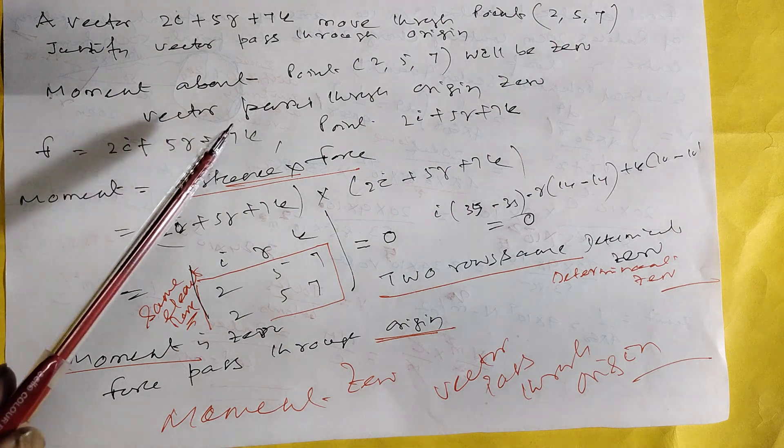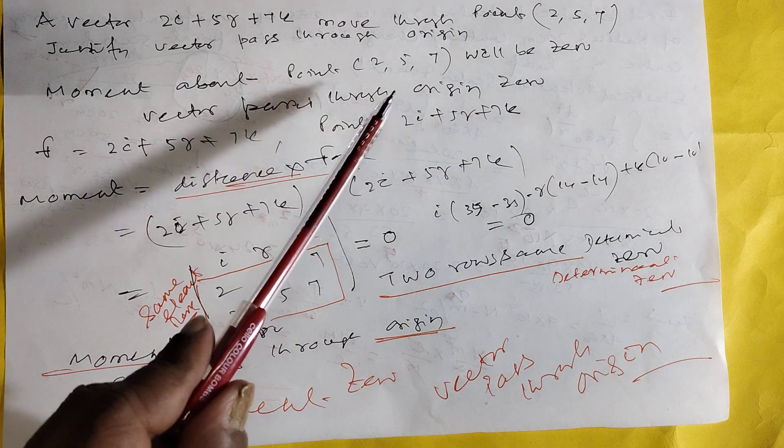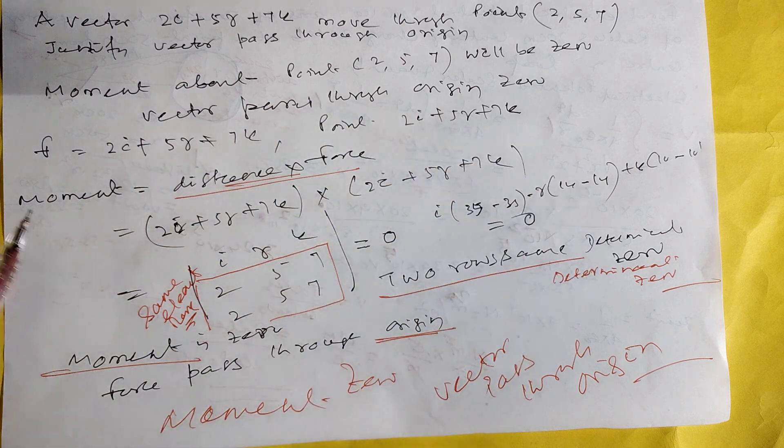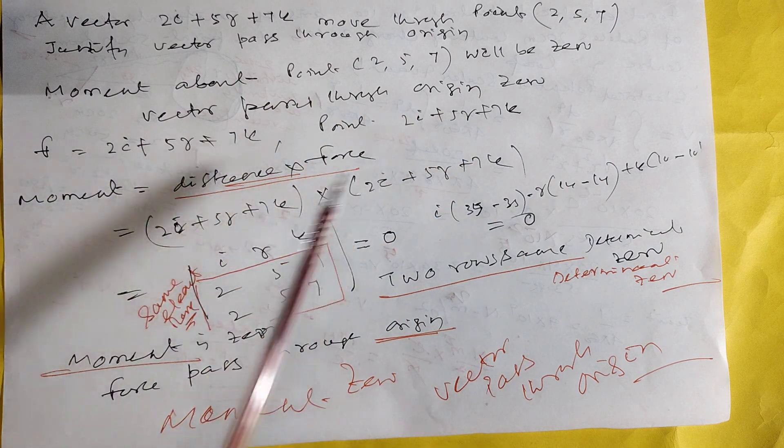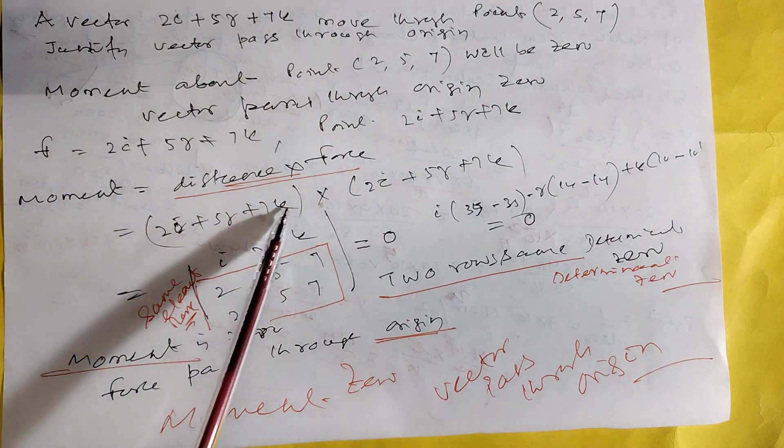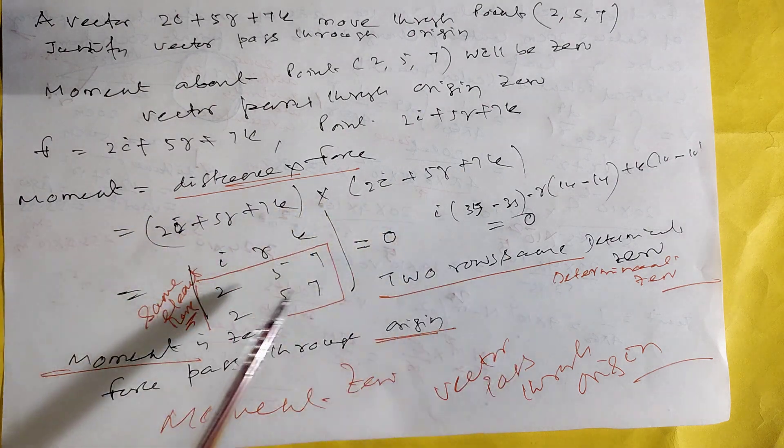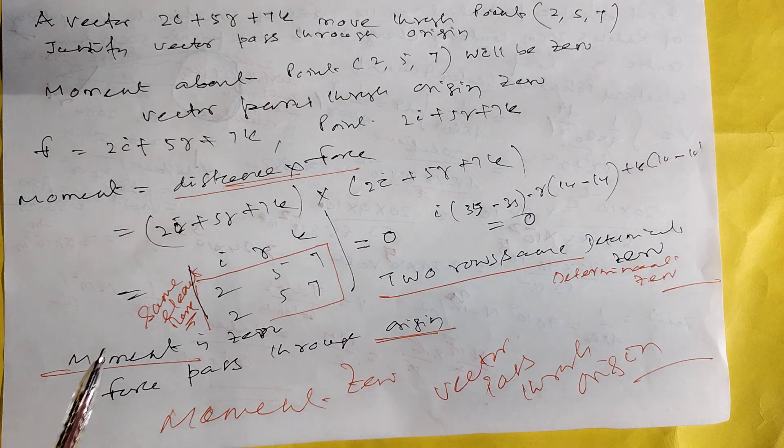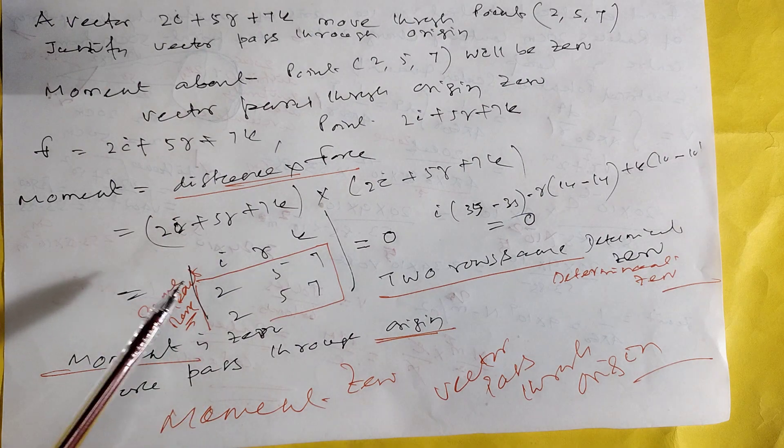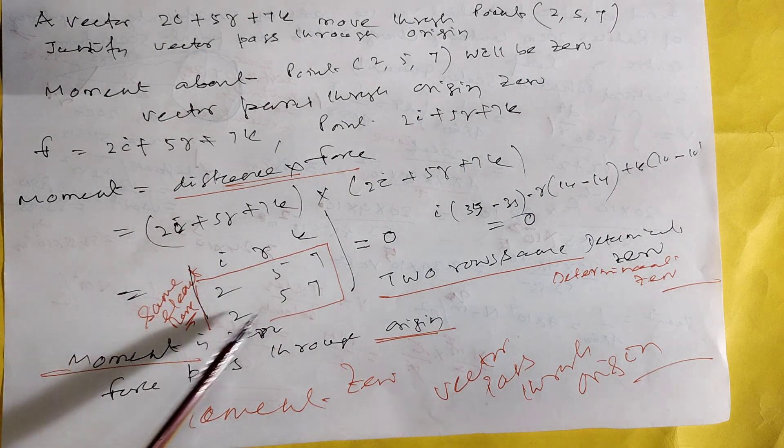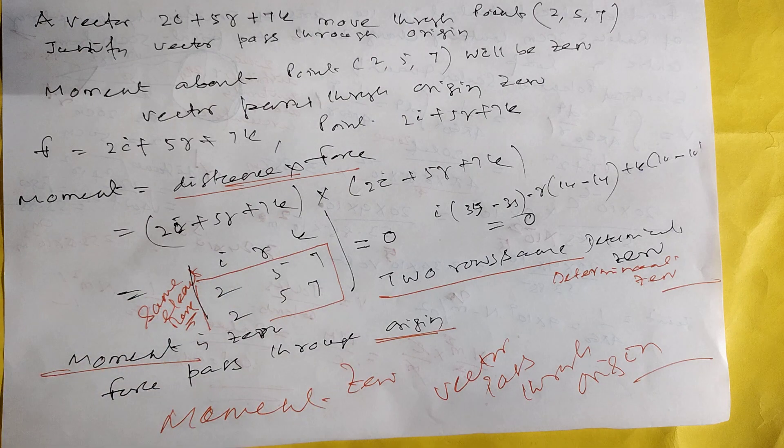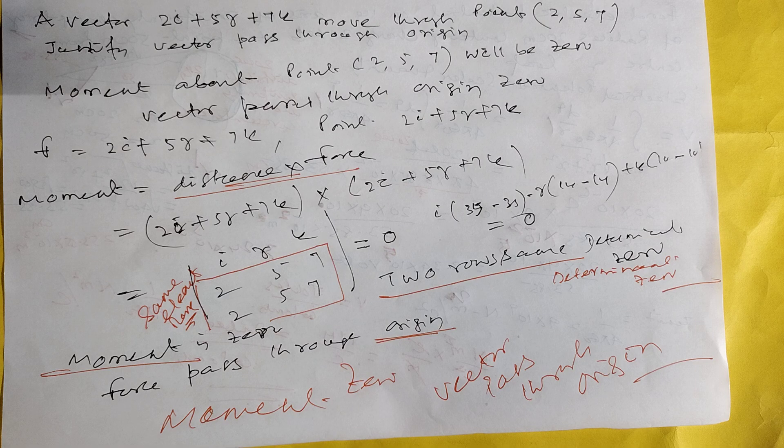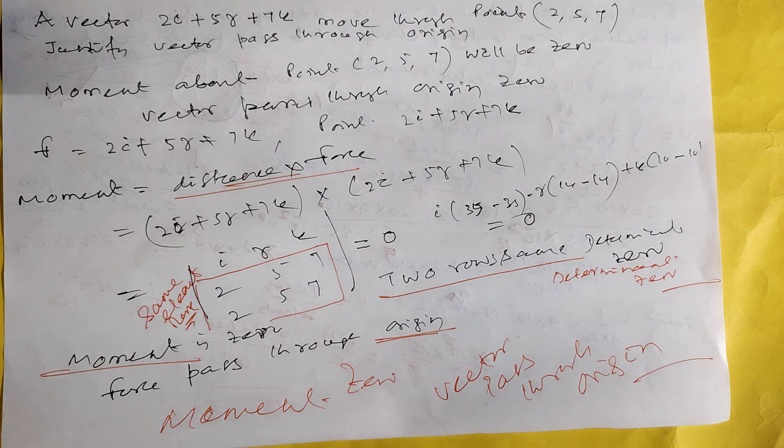What is the vector? 2i, 5j, 7k. Point: 2i, 5j, 7k. Moment: distance into force. In a determinant, when two rows are equal, the determinant is zero. Where two rows are equal, so it is zero. So this vector passes through the origin.